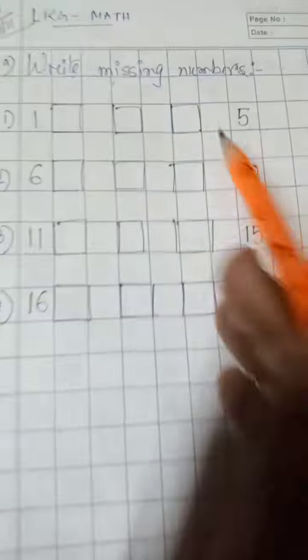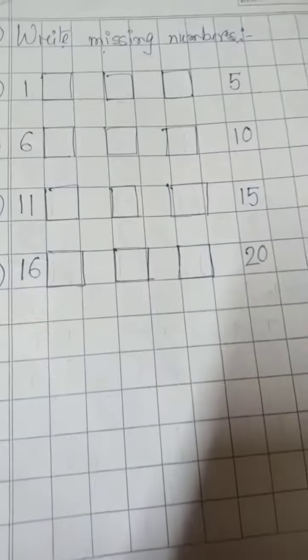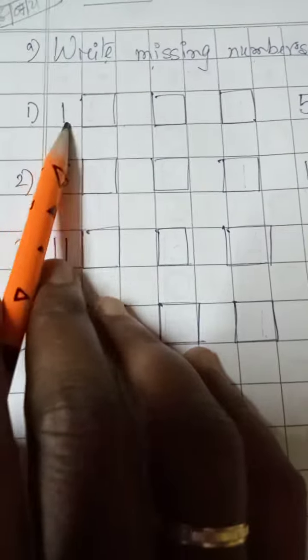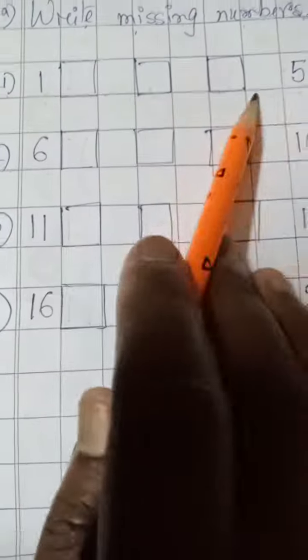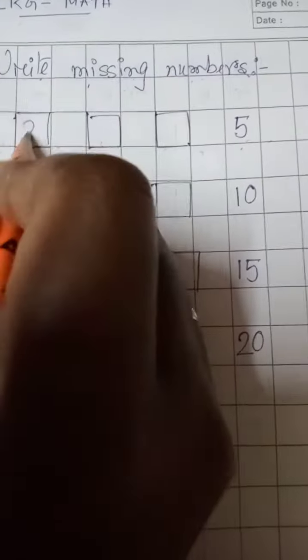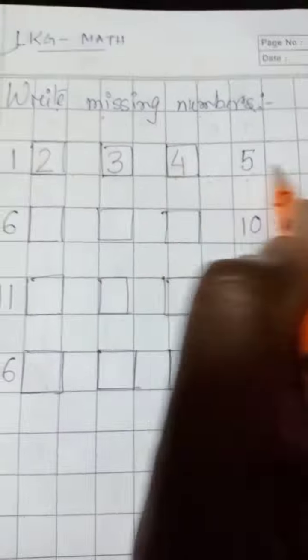So see what we do - write missing numbers. Here is the missing box numbers. Number one is: one, dash, dash, dash, five. So one, two, three, four, five. After one, it's two, three, four, five.